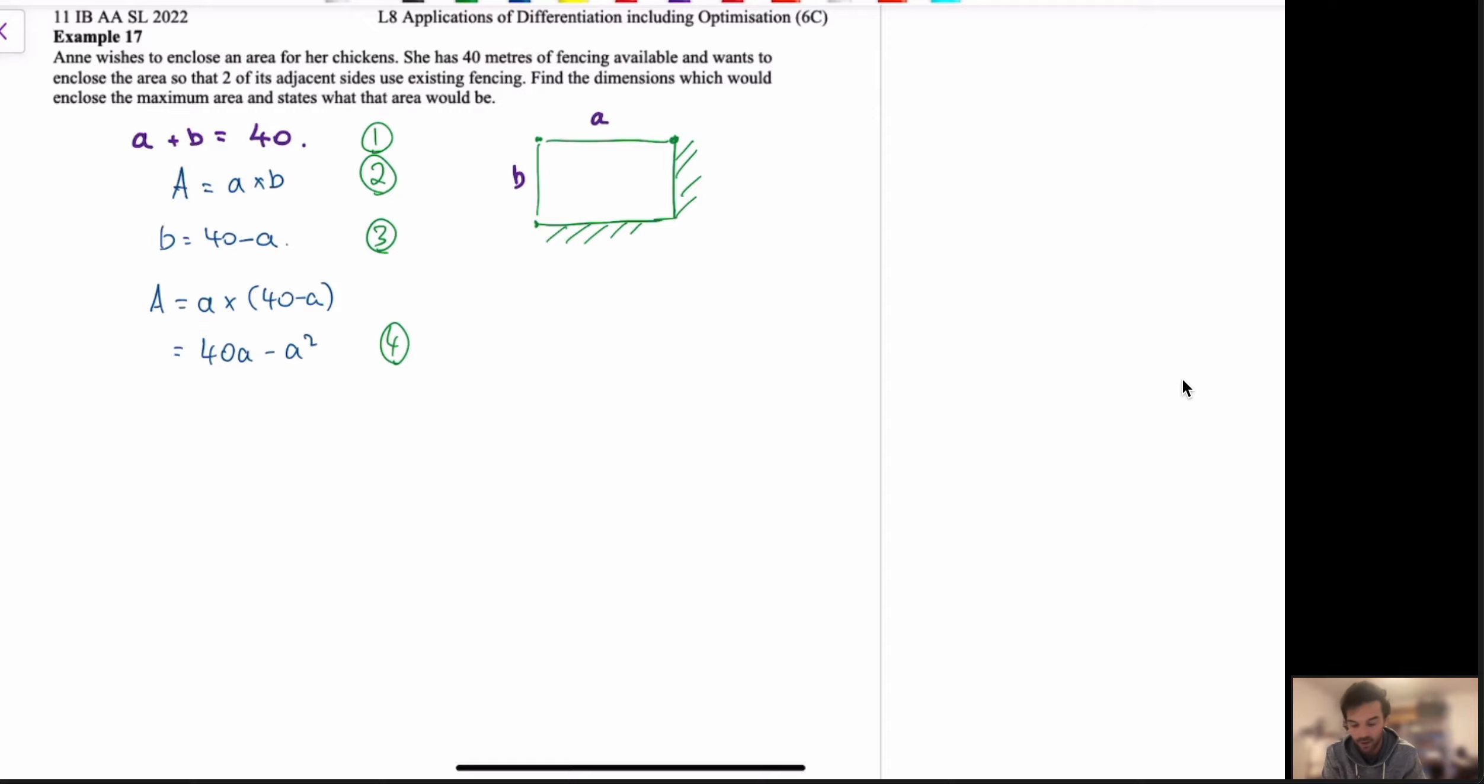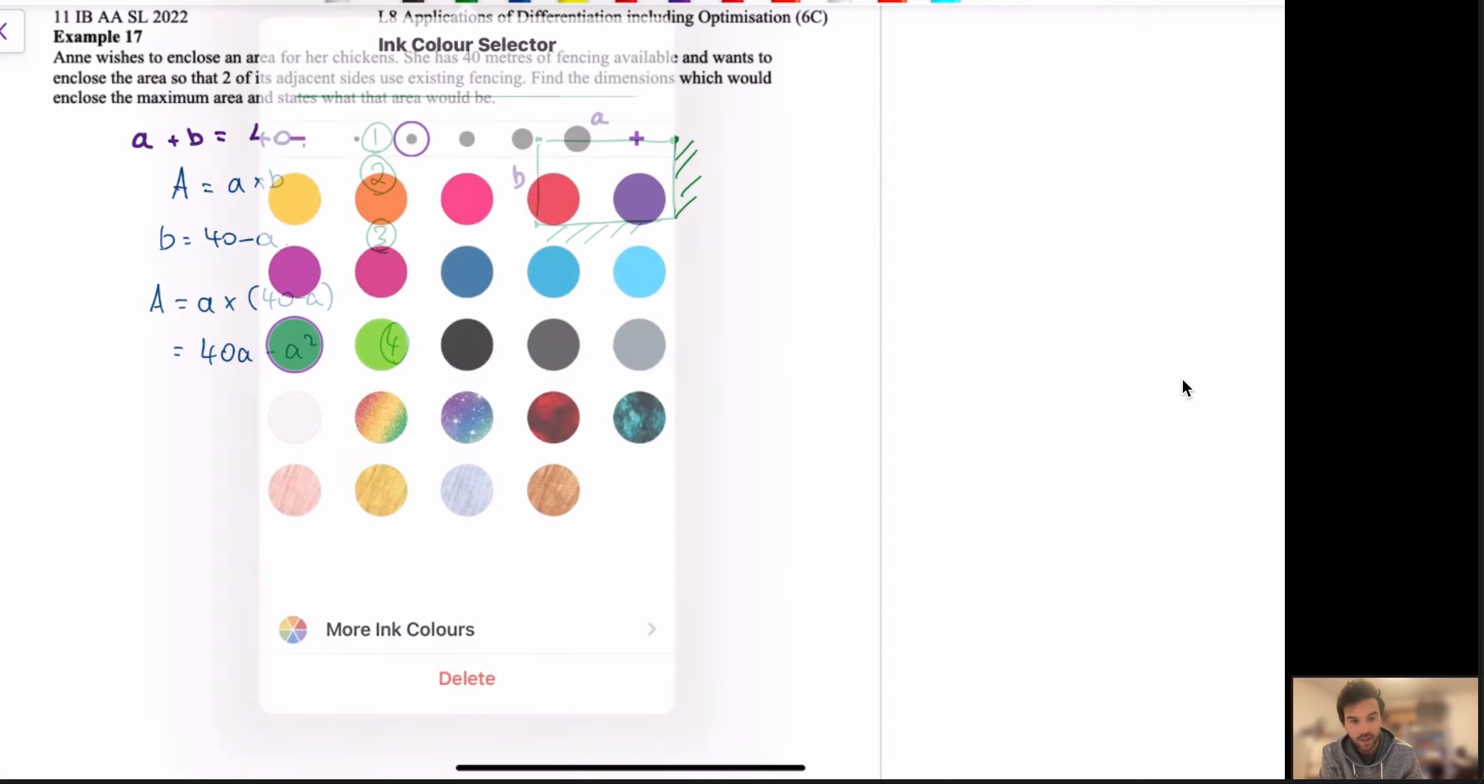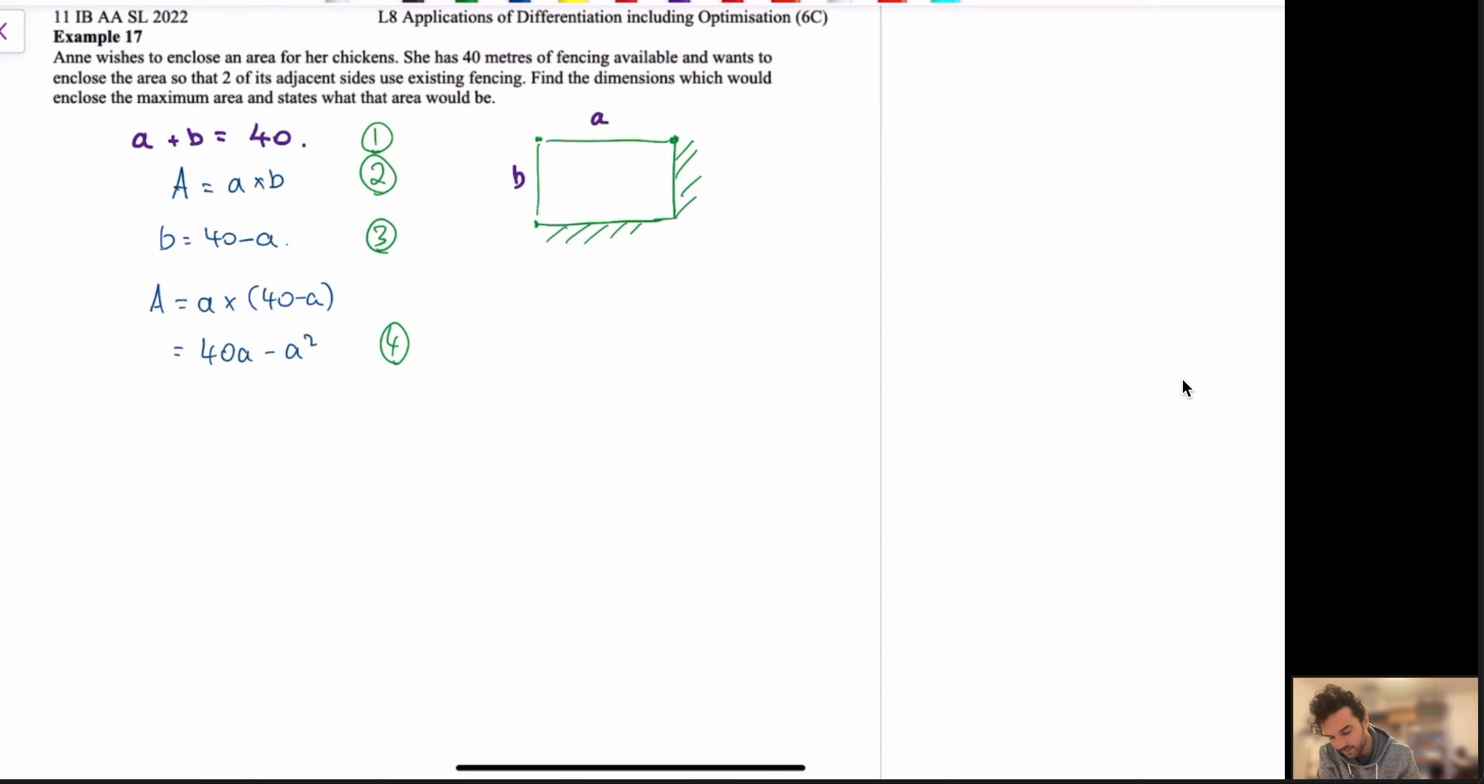Now, we need to differentiate this, so let's try dA, and I'll change colour here, dA by d small a, because we're differentiating in terms of A. We get 40 minus 2A. Now, we want to optimise, rearrange. A is equal to 20.